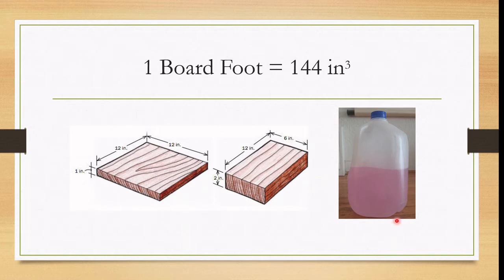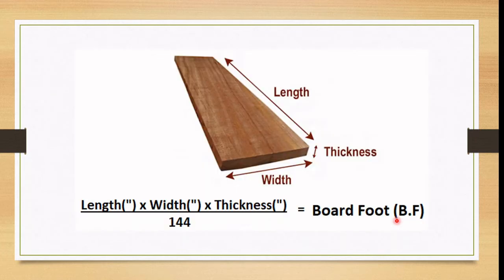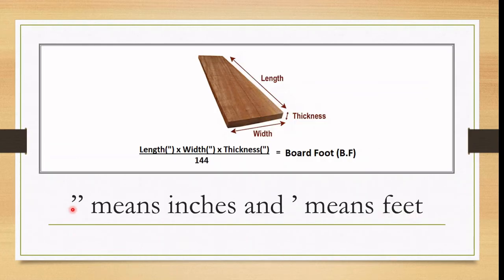So now that we know what a board foot is, let's talk about calculating board foot. So right over here is the formula to calculating board feet. So what you would need to do is you would take the length in inches and multiply that by the width in inches and multiply that by the thickness in inches. Multiply all three of those and divide it by 144. Remember, a board foot is 144 cubic inches. So that's why that 144 is down on the bottom. Whatever number you get out is the board foot. Now it's important to remember that when you see the quotation mark or the double apostrophe, it means we're talking about inches. So this formula is in inches.